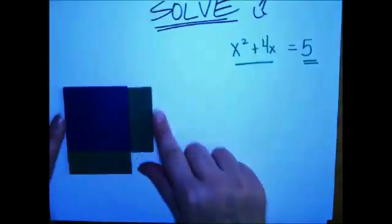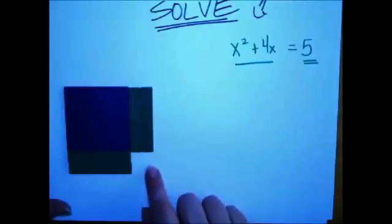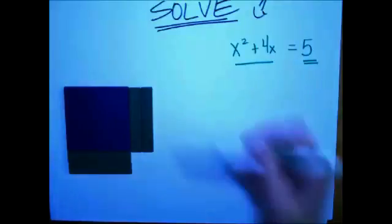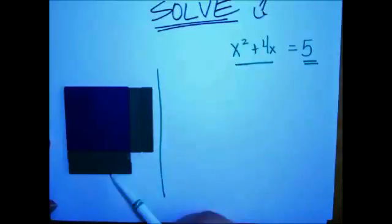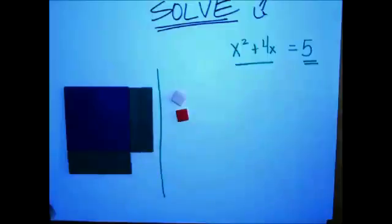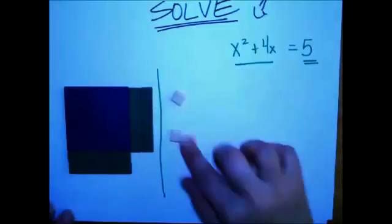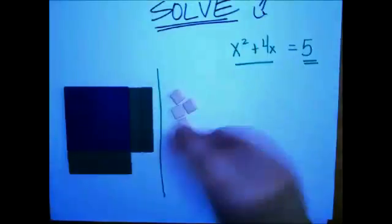The thing is, we're missing something down here to make this a square. We'll come back to that in a second. So this equals, so this is x squared plus 4x. And that equals 5 units, 3, 4, 5. So that's 5 units.